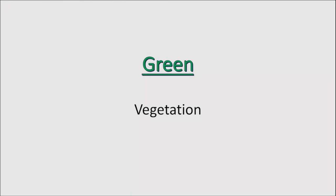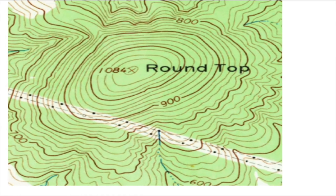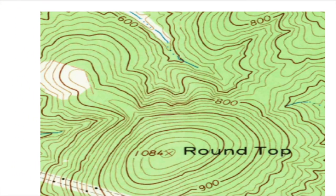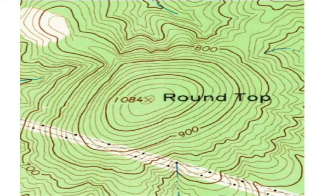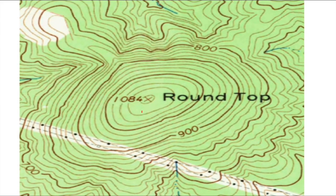Green — self-explanatory — vegetation. Here on this particular topo map, the hilltop has a brown top, and everything in between here is green, which designates vegetation — probably a forest, foliage, etc.